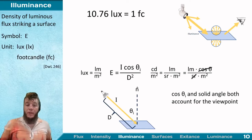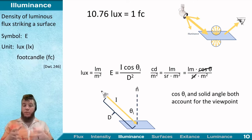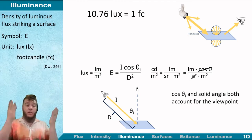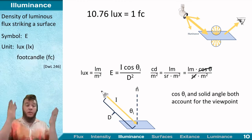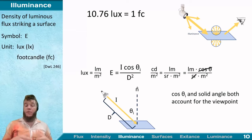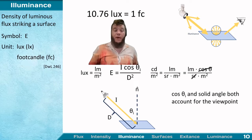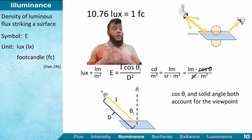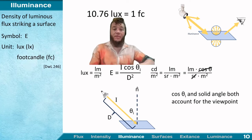Luminance — or illuminance — is the amount of flux striking a surface, measured in lux (SI) or foot-candles (imperial). The conversion is 10.76 lux per foot-candle. Please don't make this simple mistake — write out your units so you know which system you're in. It's very easy to convert between them using that factor.